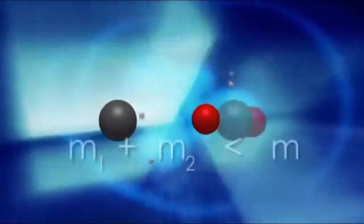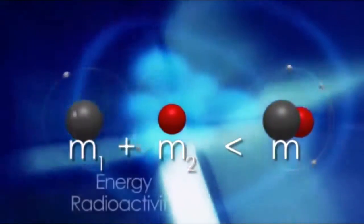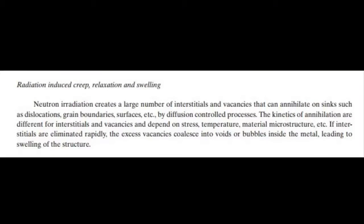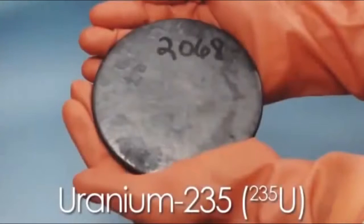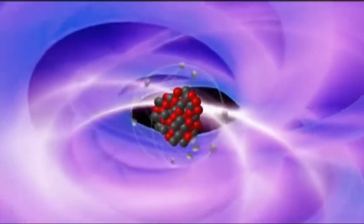Neutron irradiation creates a large number of interstitials and vacancies that can annihilate on sinks such as dislocations, grain boundaries, surfaces, etc., by a diffusion-controlled process. The kinetics of this annihilation are different for interstitials and vacancies and depend on stress, temperature, material microstructure, etc. If interstitials are eliminated rapidly, the excess vacancies coalesce into voids or bubbles inside the metal, which lead to swelling of the structure.